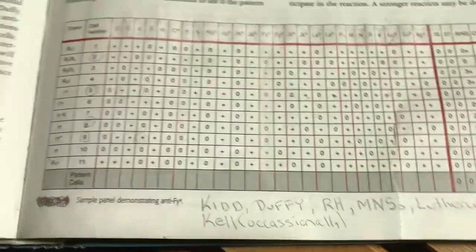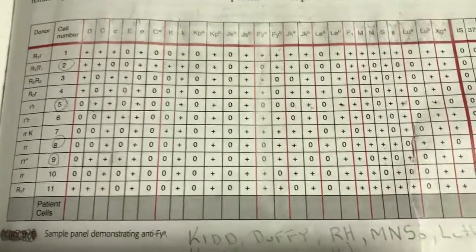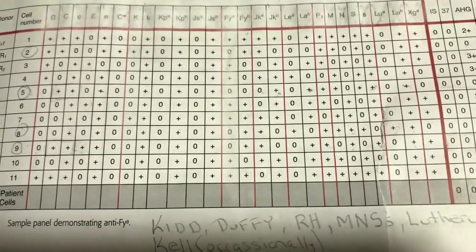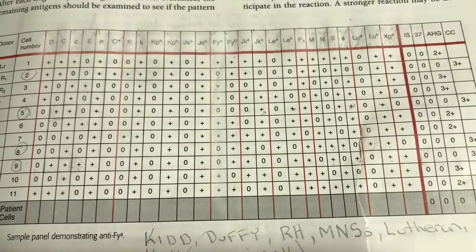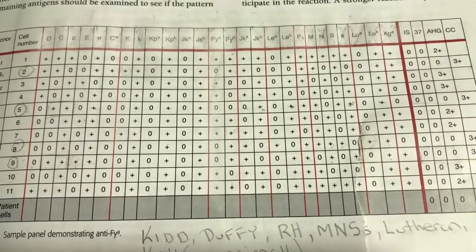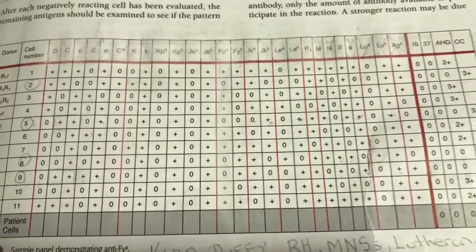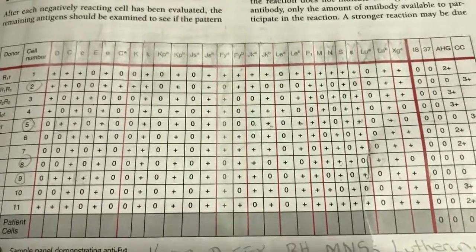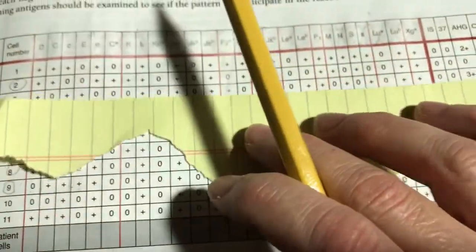We know this is 2 because we're getting these immediate spin and 37 reactions here. You have to incubate at 37, but you don't have to read it. You do have to read AHG, and gel reads at AHG. It does get incubated at 37, though. I wrote down here, the antigen systems whose antibodies can exhibit dosage.